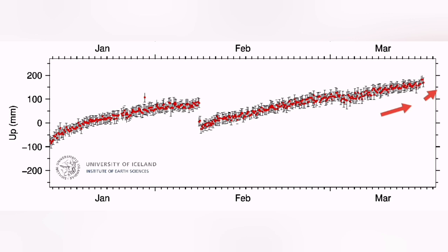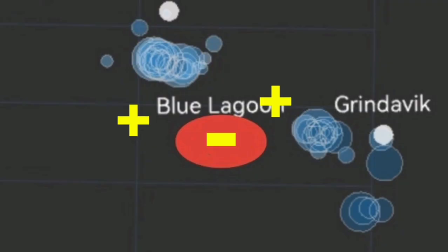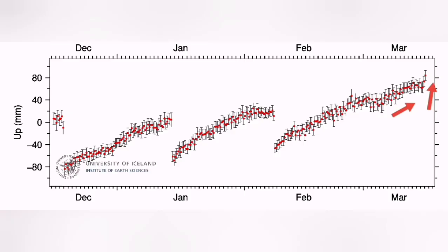Toward the east, I will show you now, is the Thorbjorn, and you can see that we have a slight uplift. Magma is flowing toward there.